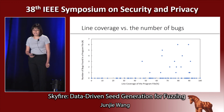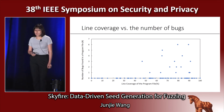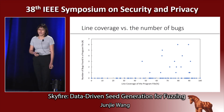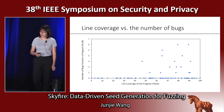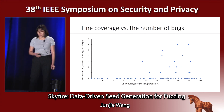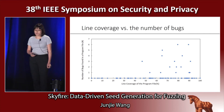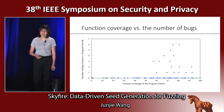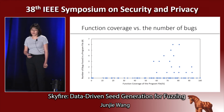We also analyzed the relationship between the line coverage of source files and the number of bugs found in those source files. We found that all the bugs are found in source files whose line coverage is more than 45%, and all bugs are found in source files whose function coverage is more than 55%.